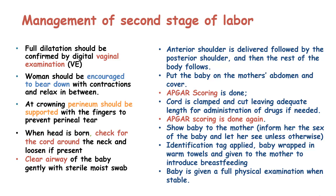After performing the first Apgar scoring at one minute, we clamp the cord and cut it, leaving an adequate length for administration of drugs if needed, such as in the case of resuscitation. We then do an Apgar scoring at five minutes and after ten minutes. We show the baby to the mother to inform her of the sex of the baby. We identify the baby and apply an identification tag on the baby's hand, wrap the baby in a warm towel, and give the baby to the mother to introduce breastfeeding. After that, we perform a full physical examination of the baby when the baby is stable.